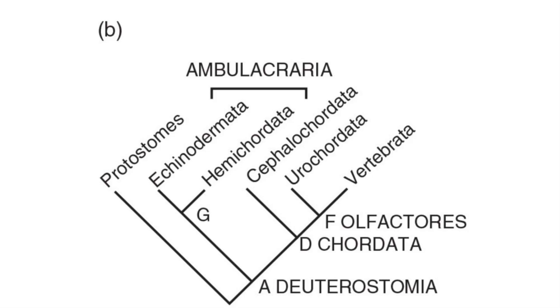Newer phylogenies, based on molecular evidence, support a closer relationship between hemichordates and echinodermata. In fact, both groups are known to secrete calcium carbonate in the formation of hard parts. This grouping is called Ambulacraria.